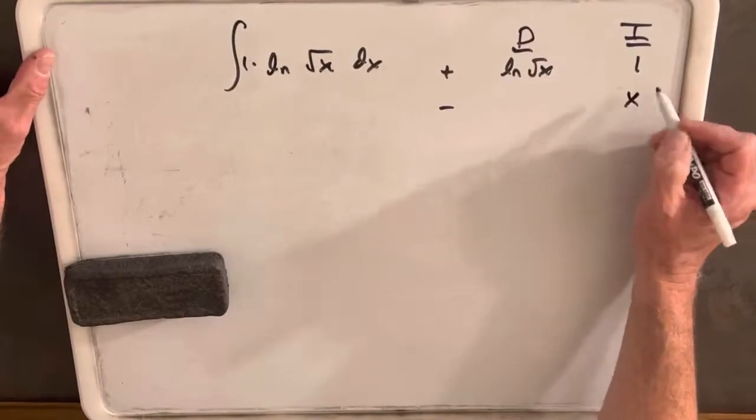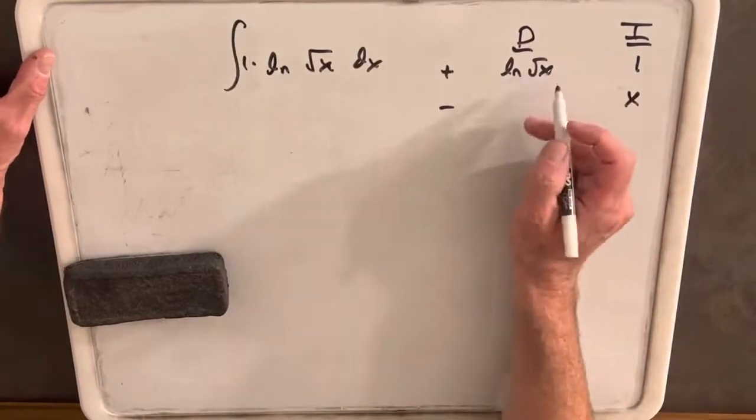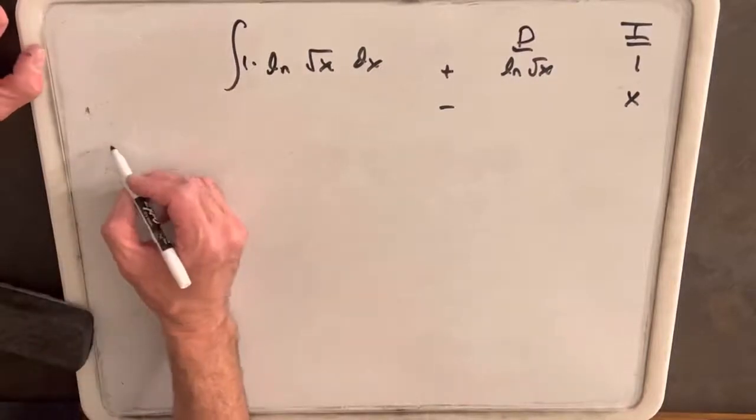Integrating 1, we get x, differentiating ln square root of x. Let's do this off to the side, because it's a little weird.